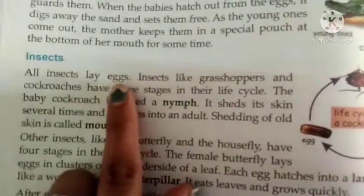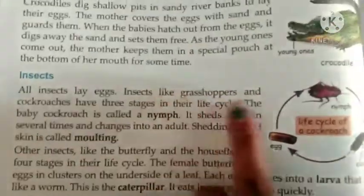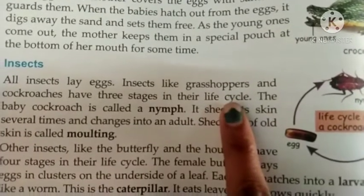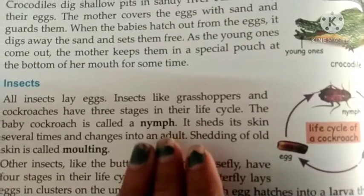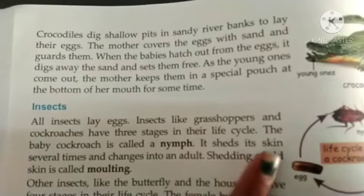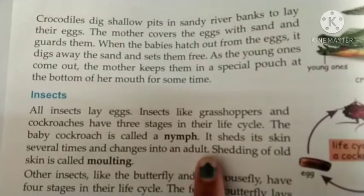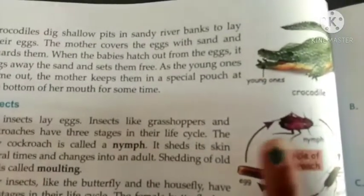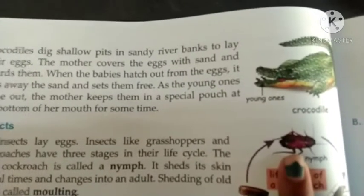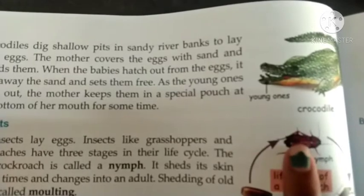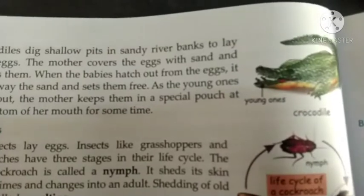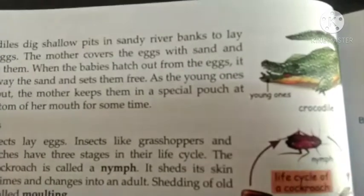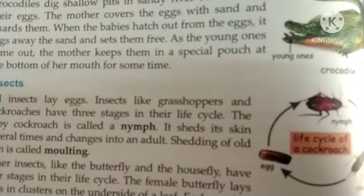Now insects: all insects lay eggs. Insects like grasshoppers and cockroaches have three stages in their life cycle. The baby cockroach is called a nymph. It sheds its skin several times and changes into an adult. This shedding of skin is called moulting. In the picture you can see: egg → baby cockroach (nymph) → skin changes multiple times through moulting → adult.